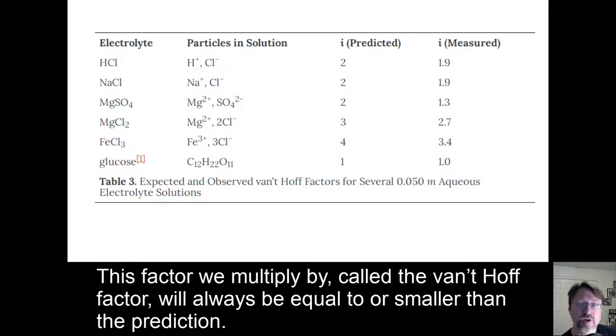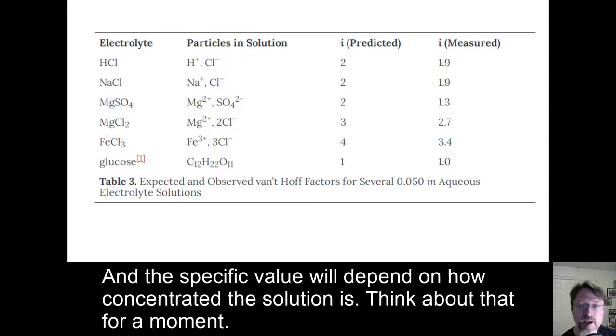This factor we multiply by, called the van't Hoff factor, will always be equal to or smaller than the prediction, and the specific value will depend on how concentrated the solution is.